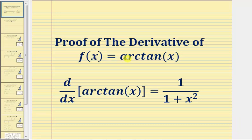Welcome to a proof of the derivative of f of x equals arctangent x. We'll prove that the derivative of arctangent x with respect to x equals one divided by the quantity one plus x squared.